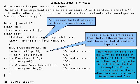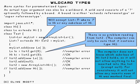We already know that if A and B are two different types, then List<A> and List<B> have got no relationship at all, no matter how A and B are related. And of course this holds for all generic types, not just lists.